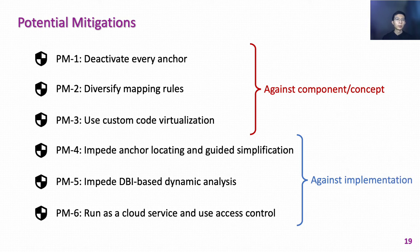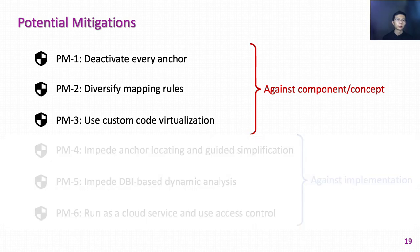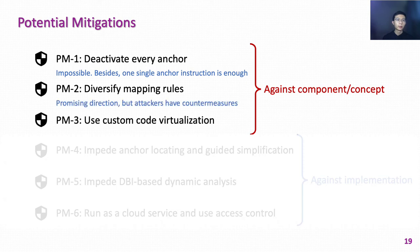Here are some potential mitigations against the Chosen Instruction Attack. The last three mitigations target the implementation of the CIA, though attackers can always find ways to improve analysis techniques. As for the first mitigations, manufacturers cannot virtualize every anchor such as SYSCALL. One single anchor instruction is enough to achieve the chosen instruction attack. PM2 is a promising direction for manufacturers, but it increases development costs and impairs the flexibility of mapping rules. Attackers can also apply countermeasures. PM3 is able to stop CIA attackers, but it is an expensive choice for source-aware authors.